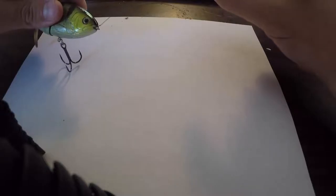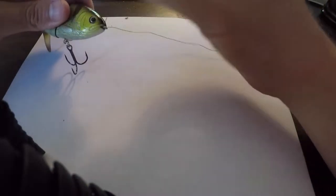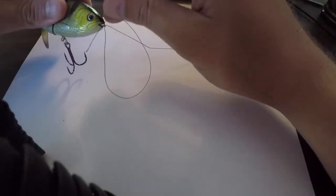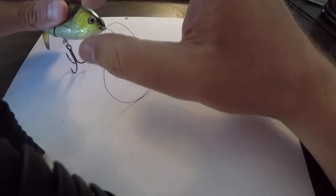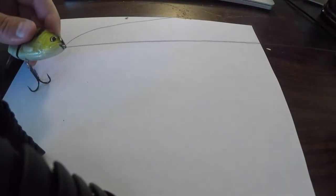The first step, you're going to wrap it through the eye of your lure twice. Give yourself some slack.